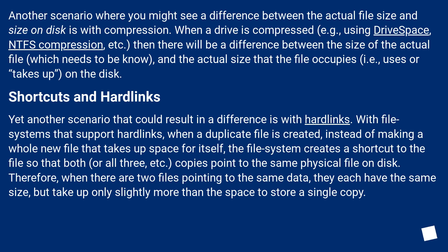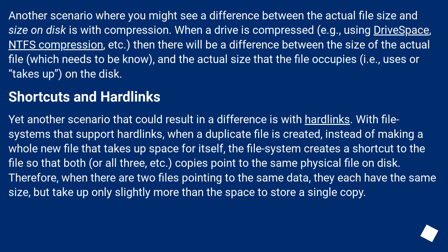Shortcuts and hardlinks: yet another scenario that could result in a difference is with hardlinks. With file systems that support hardlinks, when a duplicate file is created, instead of making a whole new file that takes up space for itself, the file system creates a shortcut so that both — or all three, etc. — copies point to the same physical file on disk. Therefore, when there are two files pointing to the same data, they each have the same size but take up only slightly more than the space to store a single copy.